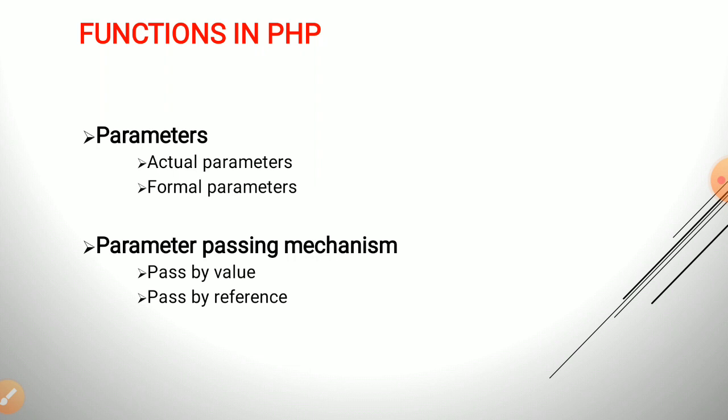If there are fewer actual parameters, the unmatched formal parameters will be treated as unbound variables. If there are more actual parameters than formal parameters, the extras will be ignored. So there is no need to match the number of actual parameters and formal parameters.